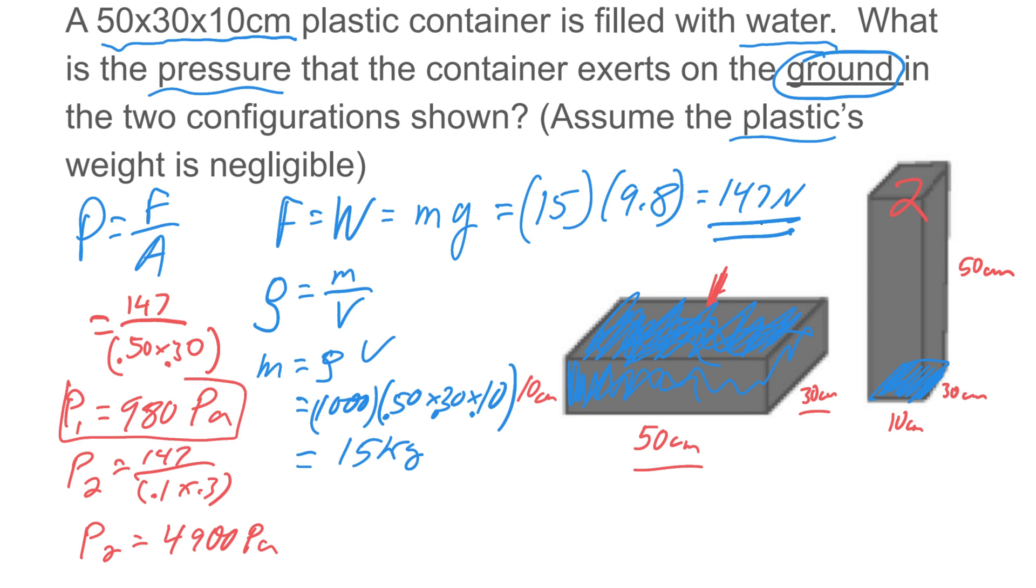So notice the pressure, even though the weight is the same, the pressure is greater in this second configuration. And that's because the area is smaller. As the area decreases, pressure equals F over A. As the area decreases, for the same force, the pressure is going to increase here. We're going to talk a lot about that concept over the course of this unit.